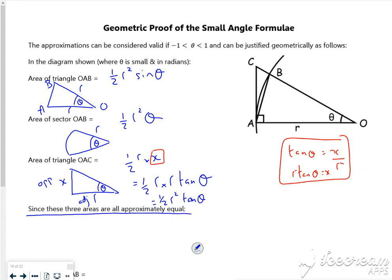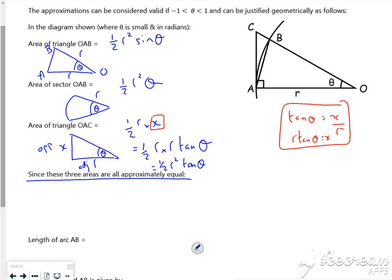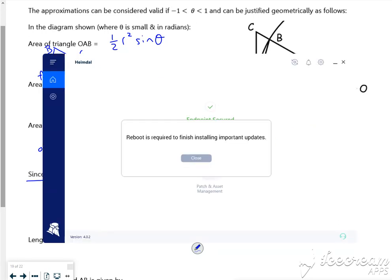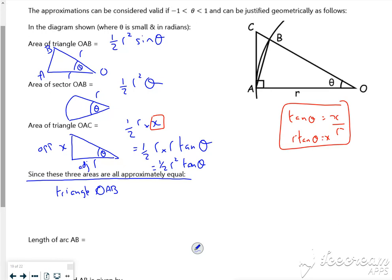So since it's pretty small, they're equal to each other. So if I use the fact that the triangle from O to A to B is the same as the sector from O to A to B, then a half R squared sine theta is equal to a half R squared theta. The half R squareds disappear, and I've got sine theta is approximately theta. So that's one done.